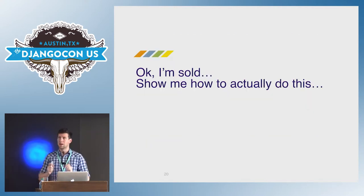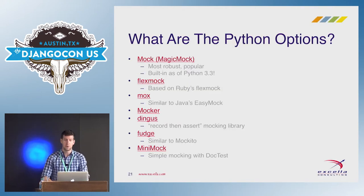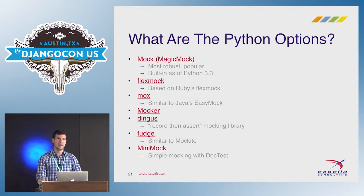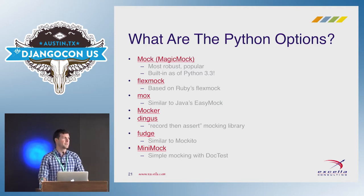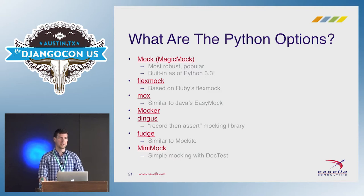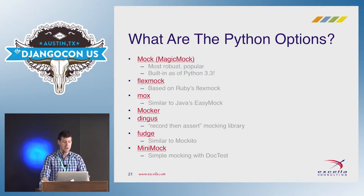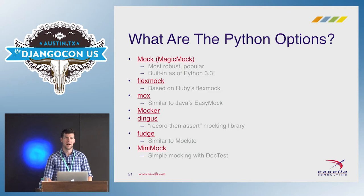So you're sold — you want to use mocking. How do you actually do this? Fortunately in Python we have lots of options. The one we're going to focus on is the mock or magic mock library. It's very popular and extremely powerful. Good news: if you're using Python 3, it's included as part of the standard library. There are other options — FlexMock, Mox, Mocker, Dingus, Fudge, MiniMock — but for the purposes of this I'm going to focus on Mock. Any of the examples I do here we could probably do in those other frameworks as well.